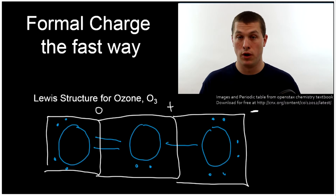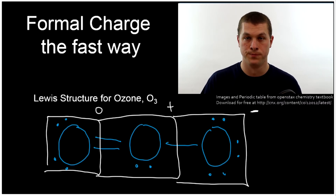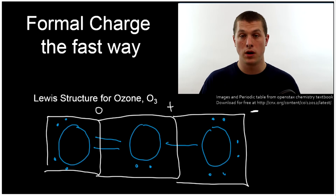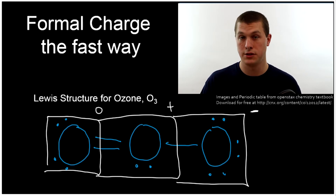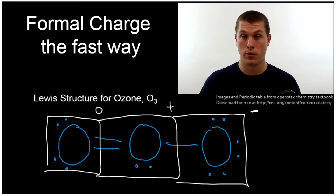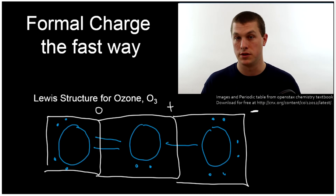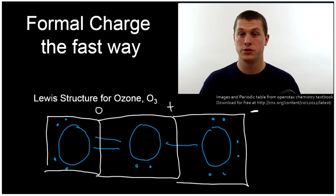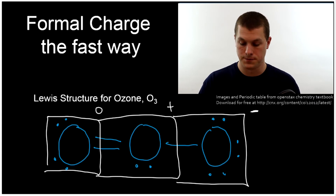The more non-zero formal charges you have, the less stable the molecule. The more charges you have that are not zero, the less stable your molecule is. So if you get a plus-two formal charge, that's pretty unstable. Zero formal charges are stable — that's the number of bonds the atoms want to share. What we're going to do in this video is show you how to calculate formal charge quickly just by looking at the number of bonds.